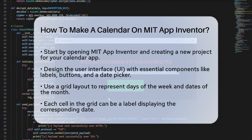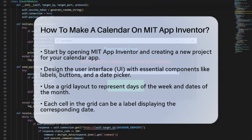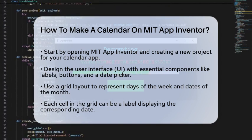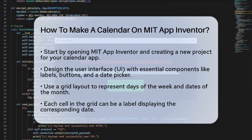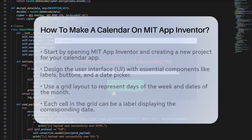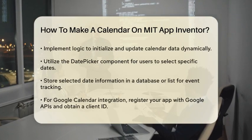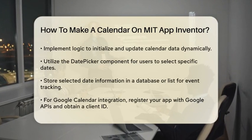To create a clean and functional calendar, you can start by designing the UI. For a basic calendar, you might want to include a grid layout to represent the days of the week and the dates of the month. Each cell in the grid can be a label that displays the date, arranged in rows for weeks and columns for days of the week.